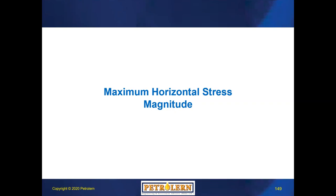Through the workflow, we started with rock property modeling with pore pressure prediction, and we got into stress modeling. The part of the stress modeling that remains is the maximum horizontal stress magnitude. We talked about stress orientation, vertical stress, and minimum horizontal stress estimation. After finishing with geomechanical modeling, we will move to wellbore stability, and I will show you how we typically do wellbore stability and what values it brings into drilling.